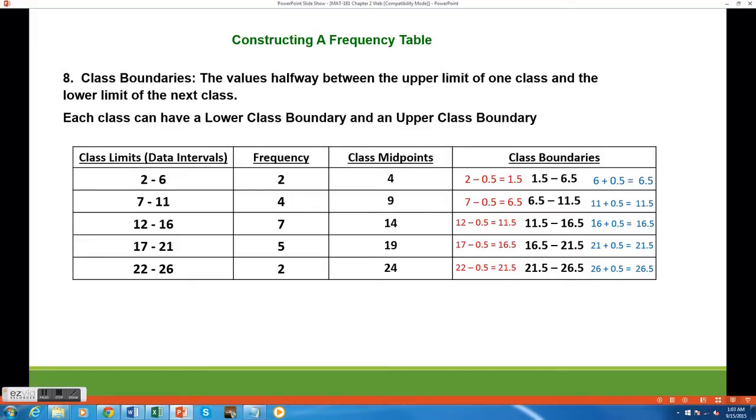Class boundaries are a lot like class limits, but they connect all the classes together, leaving no gaps between them. The upper and lower boundaries are the values halfway between one class's upper limit and the next class's lower limit. When dealing with whole number data values, the class boundaries will always end in 0.5.